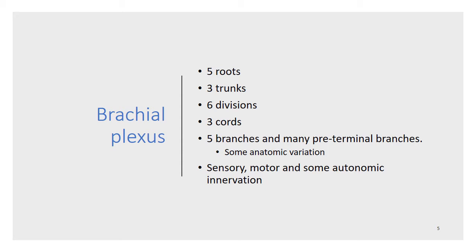We should note here that the brachial plexus also provides autonomic innervation to the upper limb through intercommunication with the stellate ganglion of the sympathetic trunk at the level of T1. This involves vasoconstriction to regulate skin pallor and temperature, contraction of erector pili muscles, and the production of sweat from sweat glands.